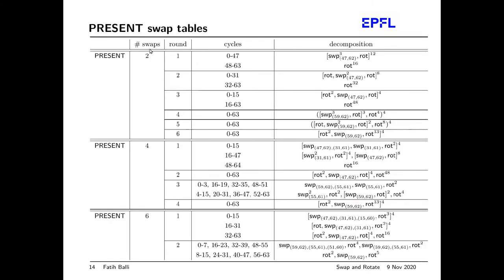Carefully choosing swap positions, with two swap operations we can complete the full PRESENT permutation in six rounds. With four swaps we can make it four rounds — four times 64 clock cycles. With six swaps in total, we can complete everything in just two rounds: the first round executes the transposition layer, and the second round fixes the column positions.